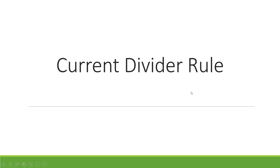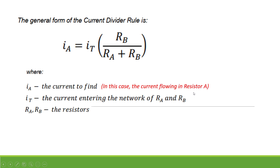The next topic is the current divider rule. The current divider rule has a general form: I_A equals I_T multiplied by R_A divided by (R_A plus R_B). Note that I_T here is not necessarily the total current of the whole circuit, but the current entering the network of R_A and R_B.